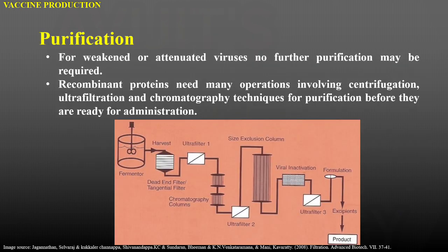Now comes purification. For weakened or attenuated viruses, no further purification may be required. Recombinant proteins need many operations involving centrifugation, ultrafiltration, and chromatography — for example, ion exchange chromatography, column chromatography, and size exclusion chromatography — for purification before they are ready for administration. This flowchart describes how the purification process takes place in vaccine production. After harvesting, the purification process starts and continues till the size exclusion column.